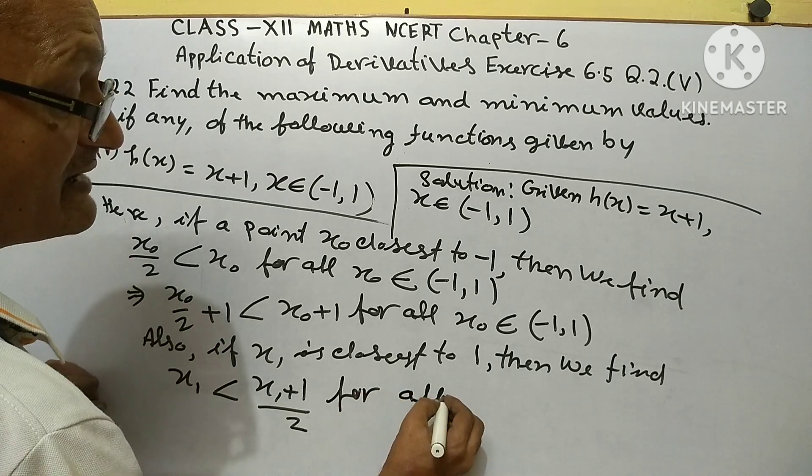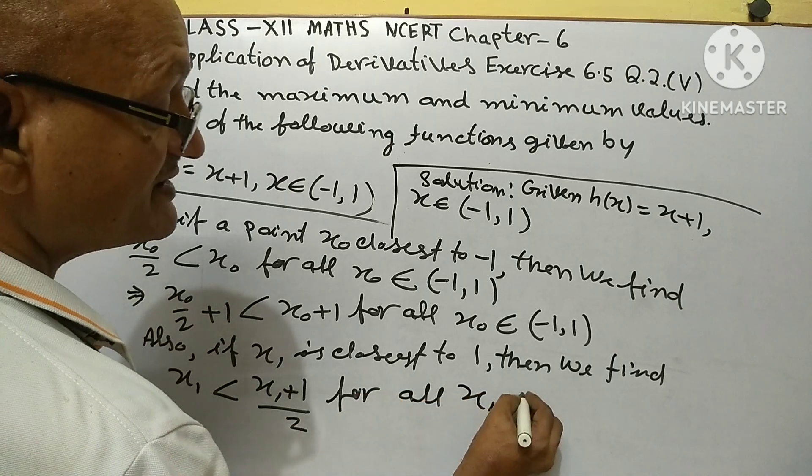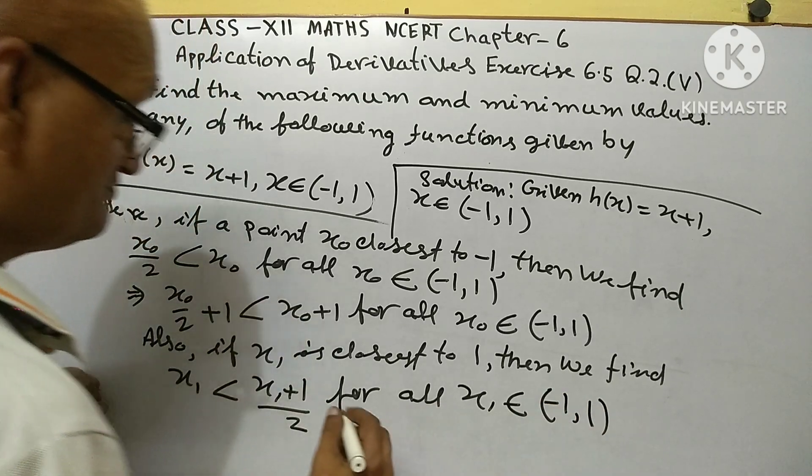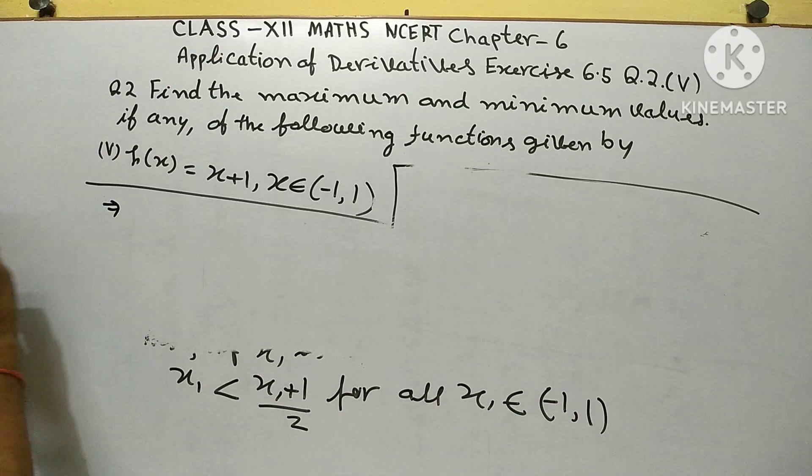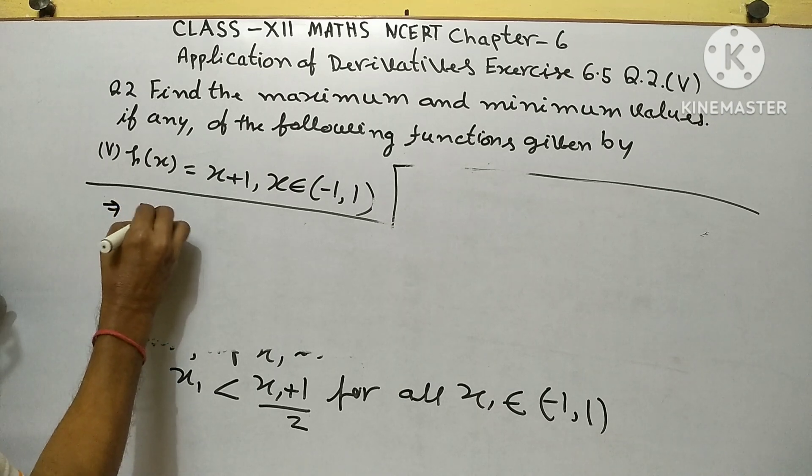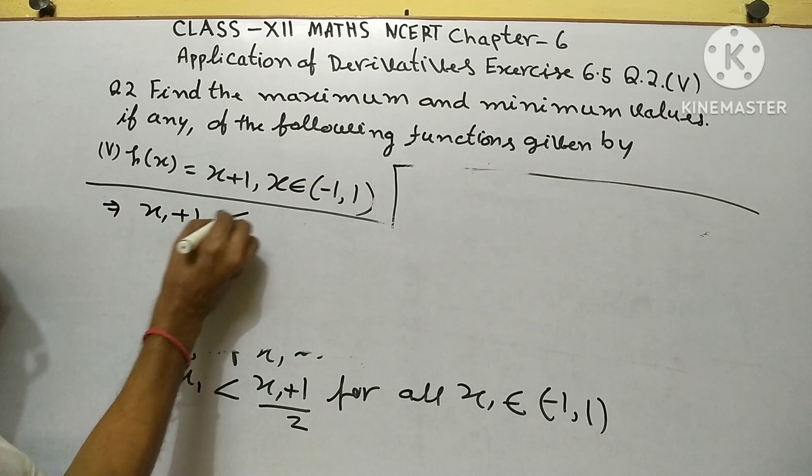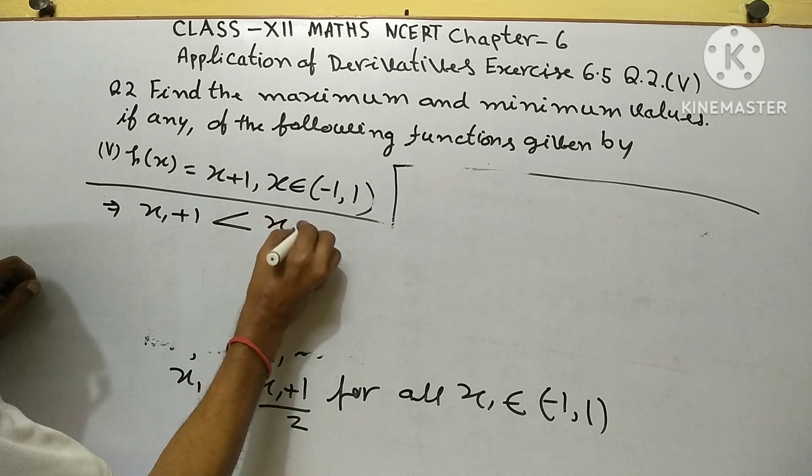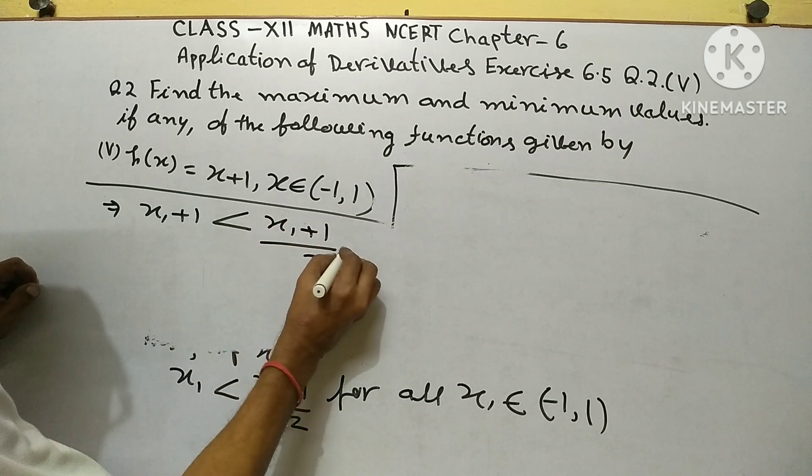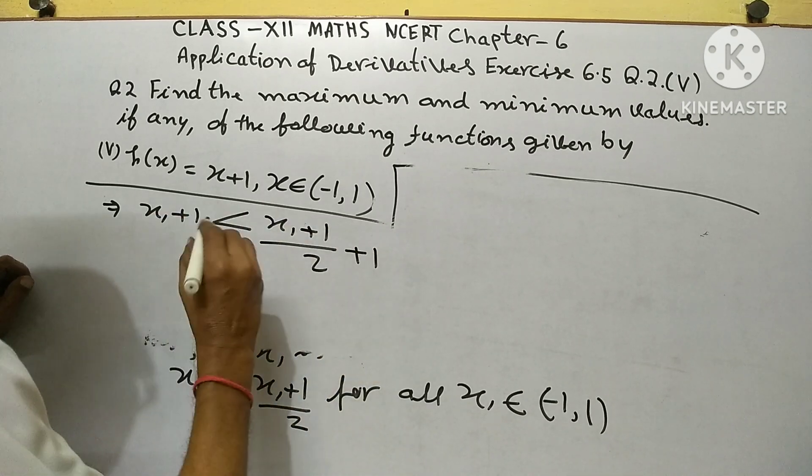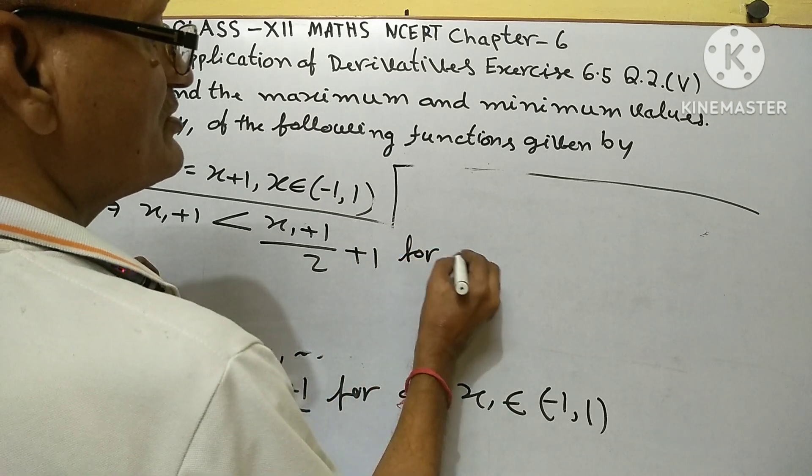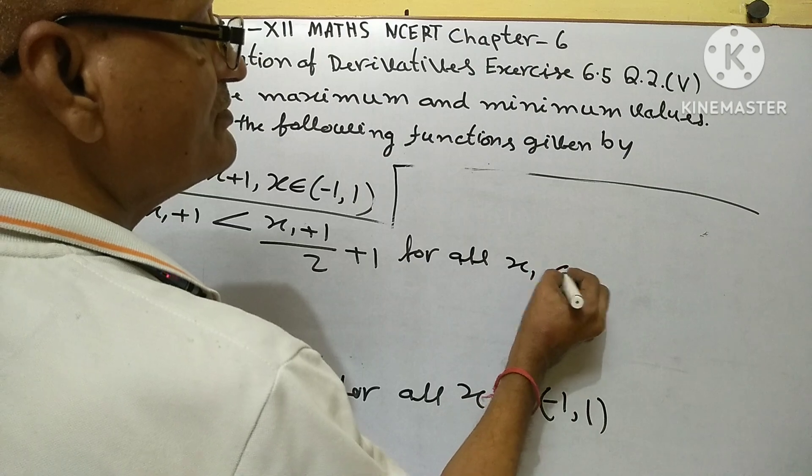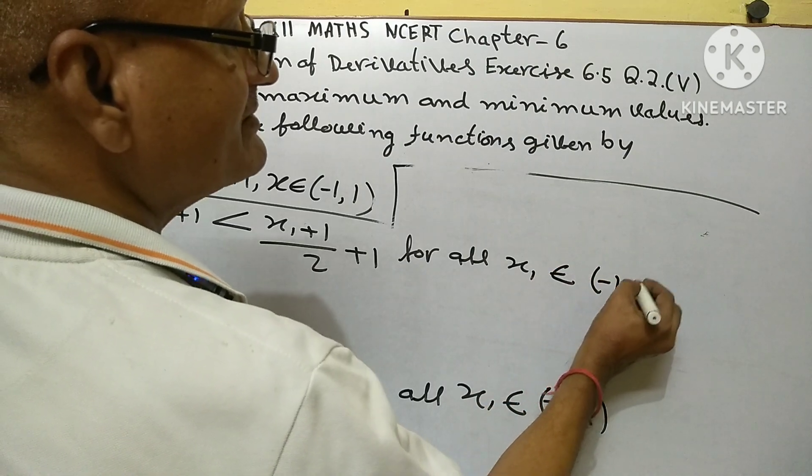For all x_0 belonging to the interval minus 1, 1, this implies x_0 plus 1 is less than x_0 plus 1 over 2 plus 1.